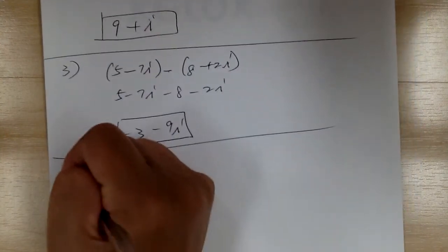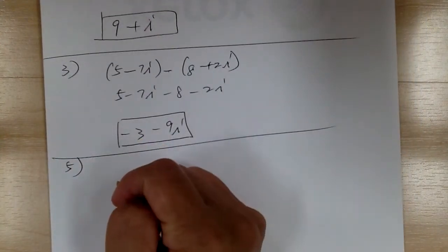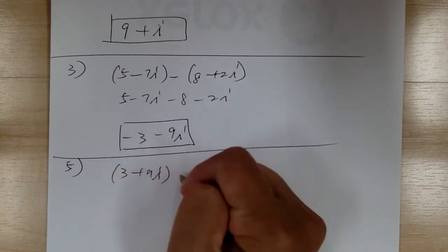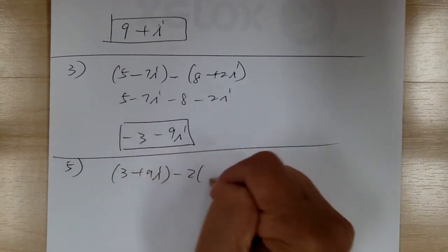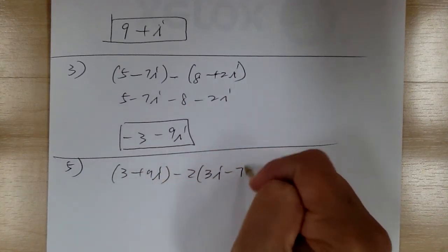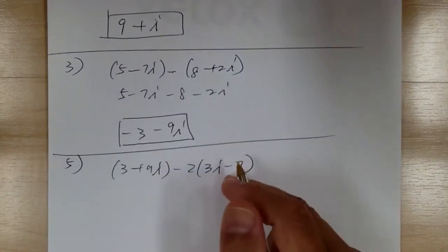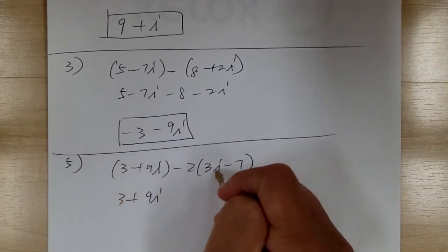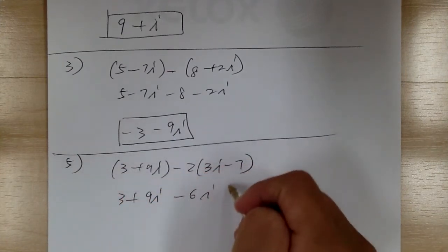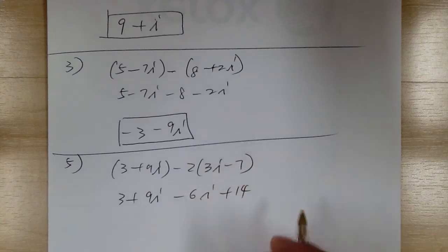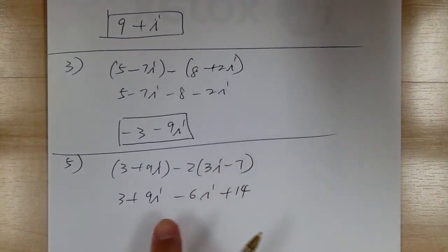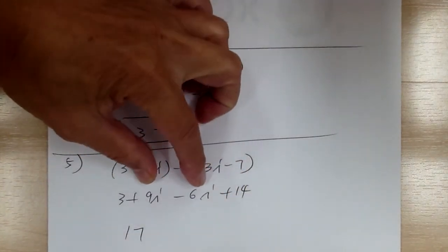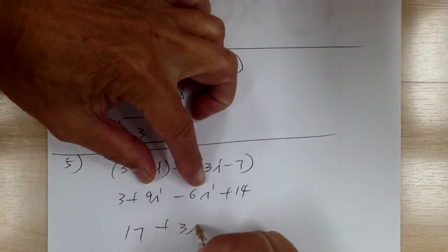Number 5: you have 3 plus 9i minus 2 times (3i minus 7). Distribute to get rid of parentheses first: minus 6i and plus 14. Combine the real numbers to get 17, and combine the imaginary numbers to get plus 3i.